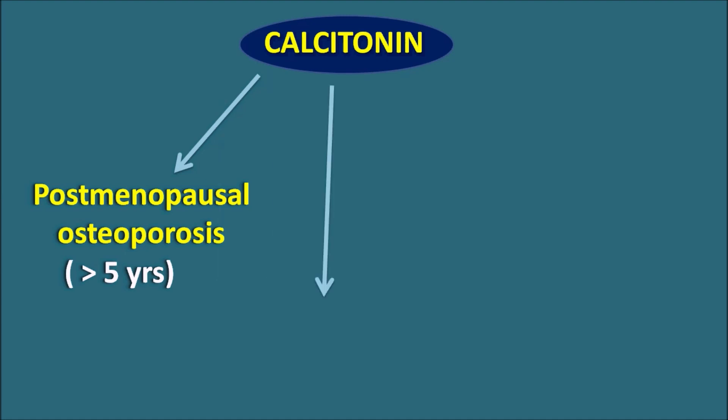Similarly, calcitonin can also be given to control hypercalcemia. One of the important roles of this peptide hormone is to control calcium levels within the plasma. So whenever raised levels of calcium are observed due to any physiological disorders like carcinoma or any other conditions, calcitonin can be given to control the raised calcium levels within the plasma.